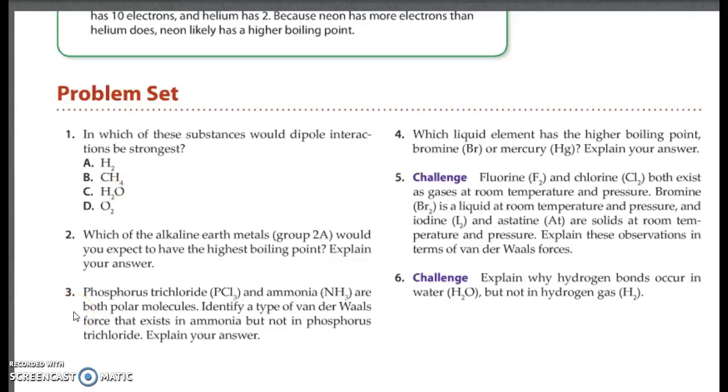Number 3. Phosphorus trichloride and ammonia are both polar molecules. Identify a type of Van der Waals force that exists in ammonia, but not in phosphorus chloride. Explain your answer. Hit pause. Answer is hydrogen bonding. You have to have hydrogens in order to have hydrogen bonding.